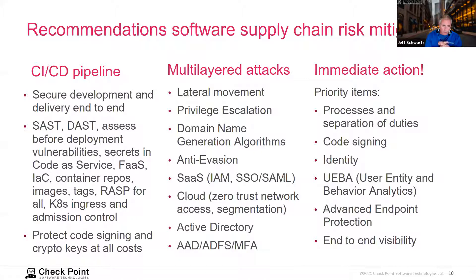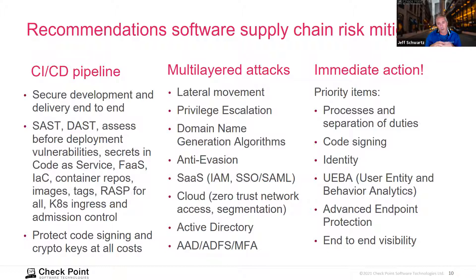Going one level deeper in the supply chain risk mitigation plan, we can distill this down to three different layers. For the CI/CD pipeline, there's secure development and delivery end-to-end. We talked about evidence-based trust between assets, which aligns with zero trust models many organizations have adopted — identifying the smallest atomic element of security we can create an envelope around to ensure infrastructure is not exposed and that there are no downstream risks introduced by adjacent elements of the application delivery cycle.